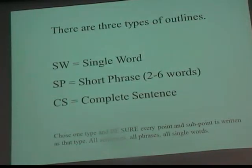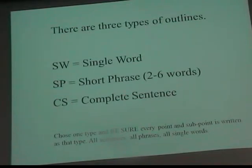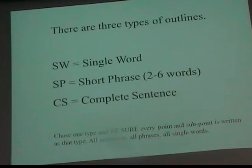There are three types of outlines. In answer to the test question, what are the three types of outlines, you would put down — don't use the abbreviations — write down single word, short phrase, and complete sentence. You're going to pick one of those types and be sure that every point and subpoint is written as that type — everything, sentences, phrases, or single words.